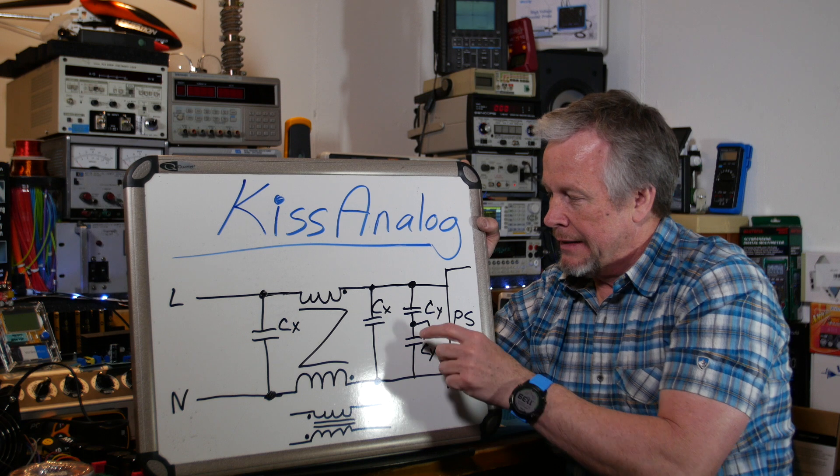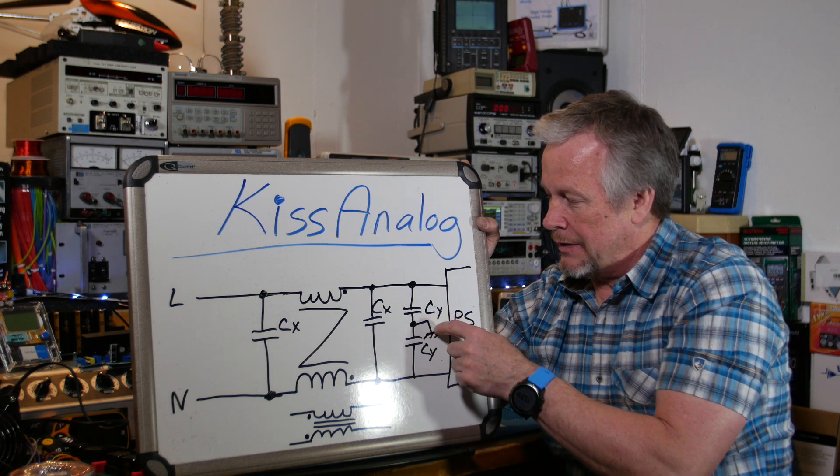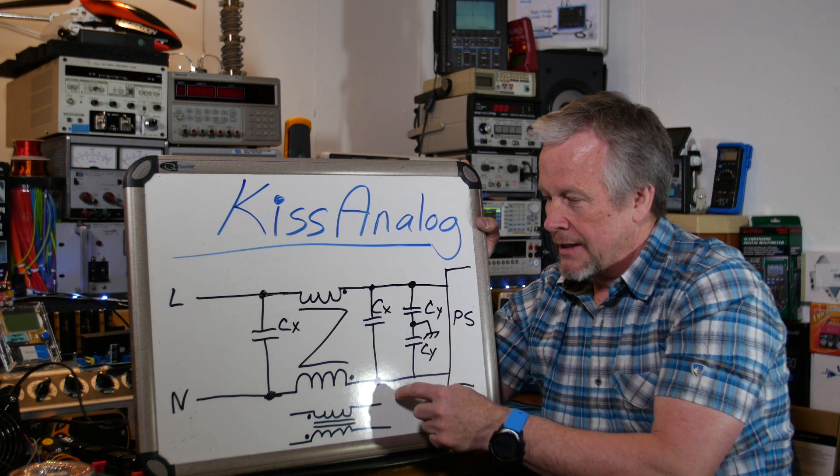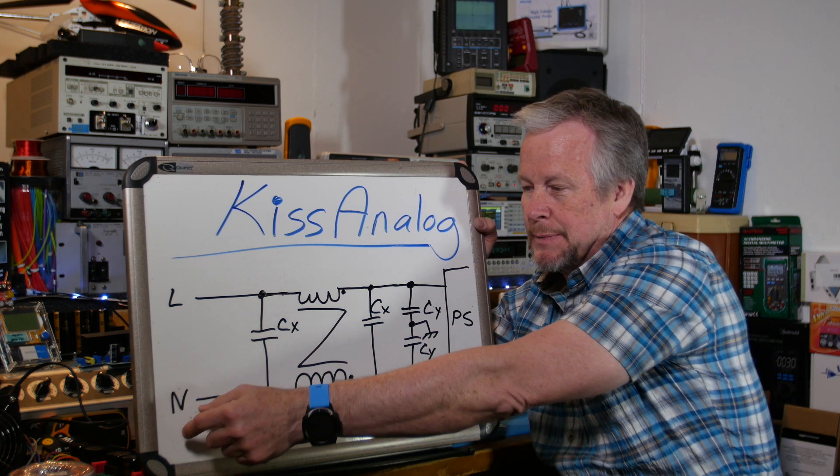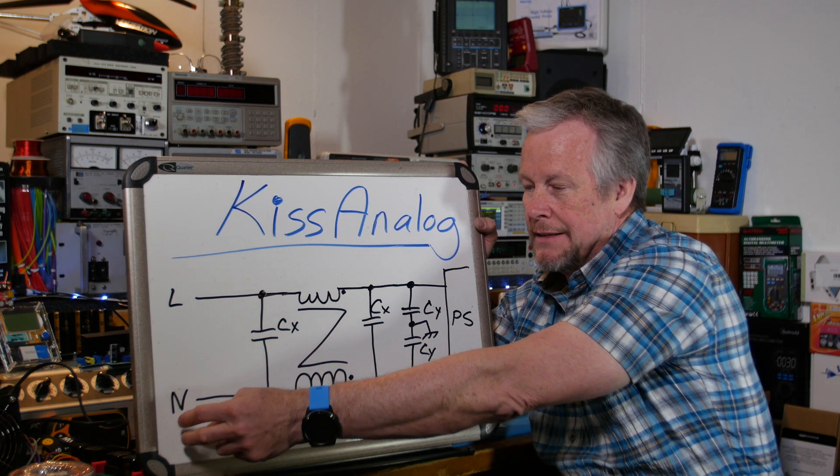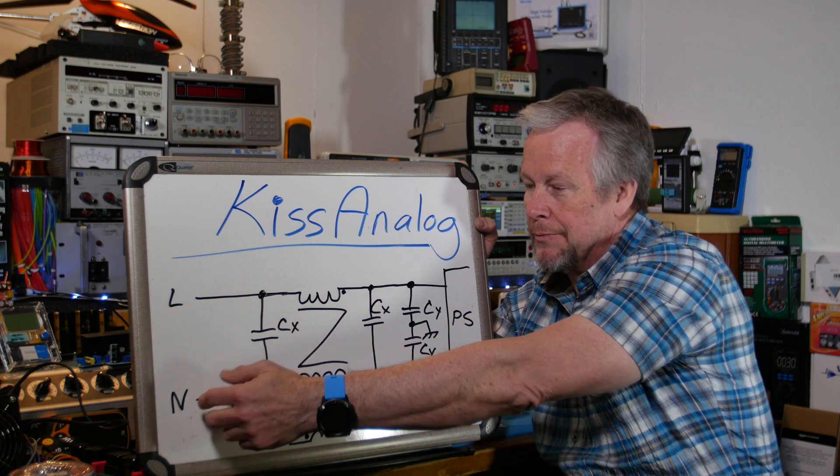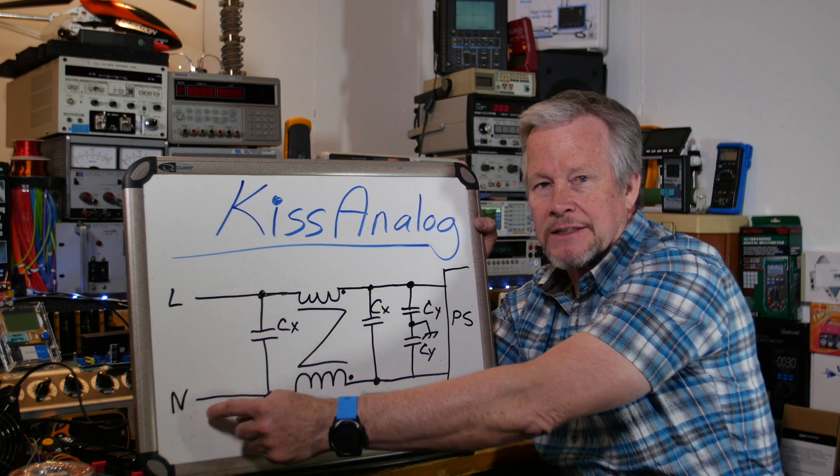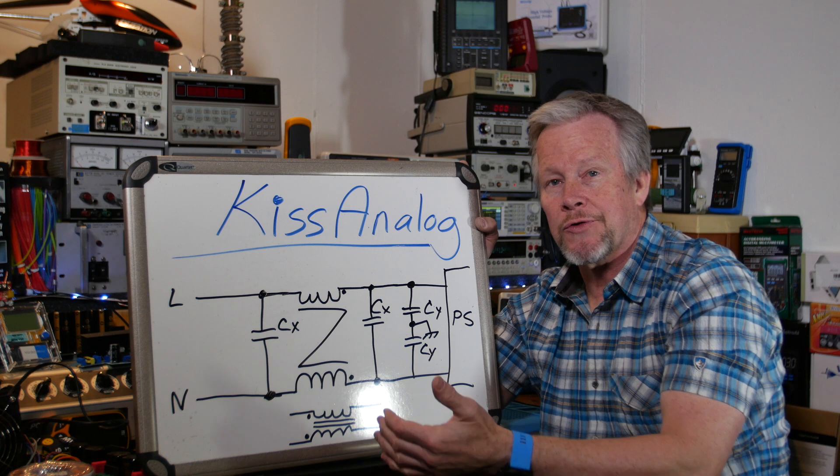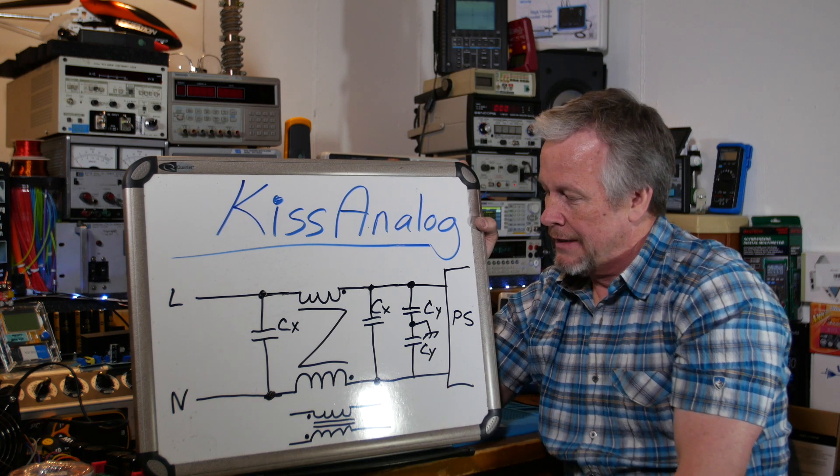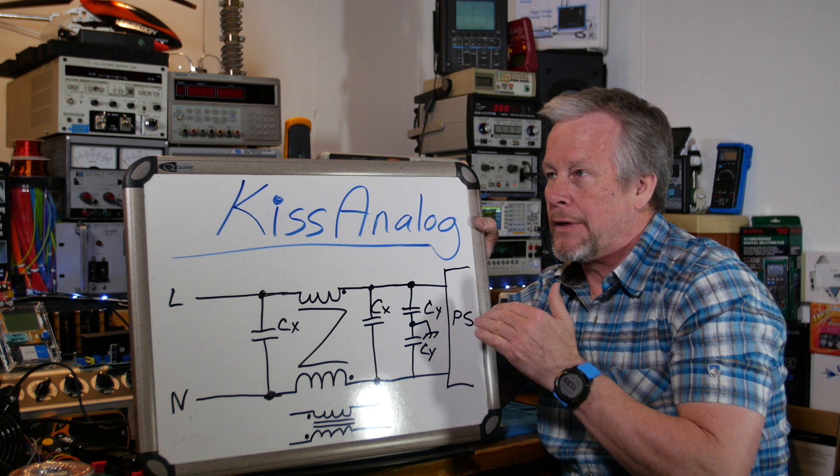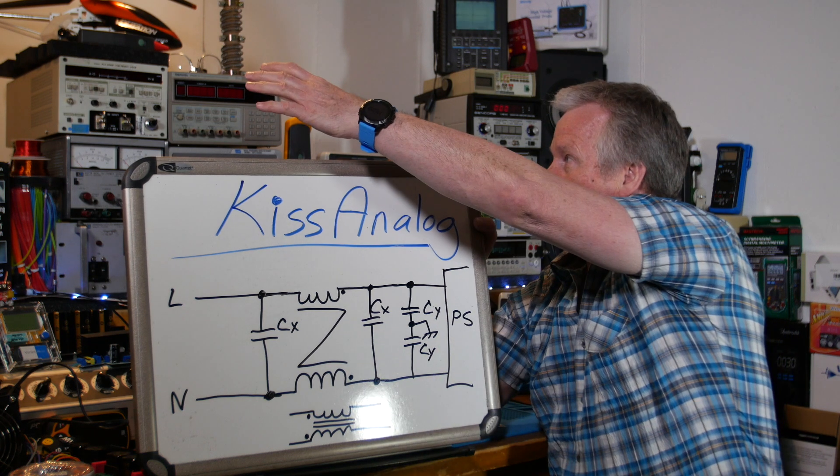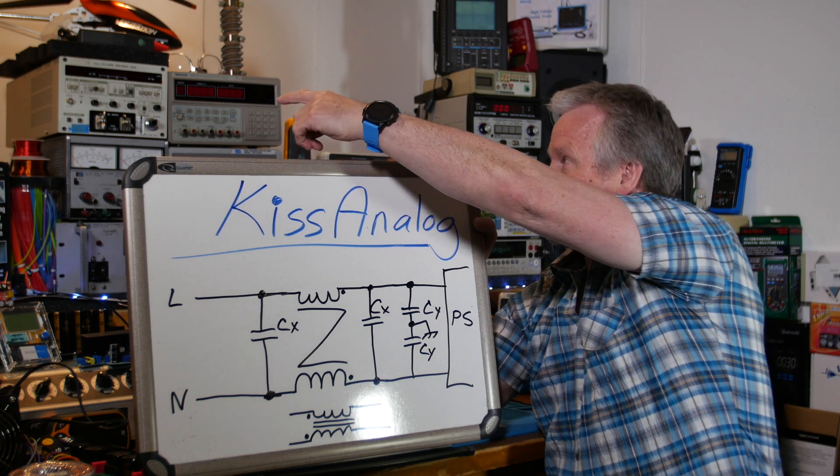There's going to be a certain amount of current leaking off in this chassis, going back on your earth ground, going back to your service entrance. Because where the power comes in to the home, neutral and chassis are tied together, or neutral and earth ground are tied together. So you'll have this leakage path.